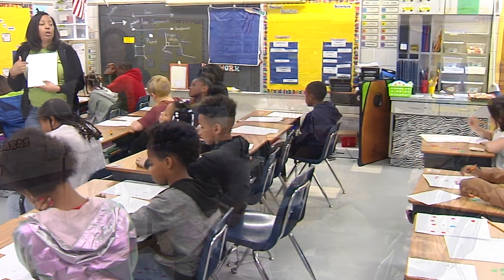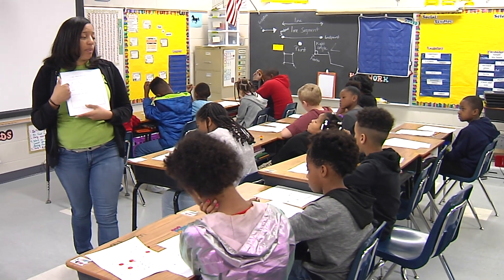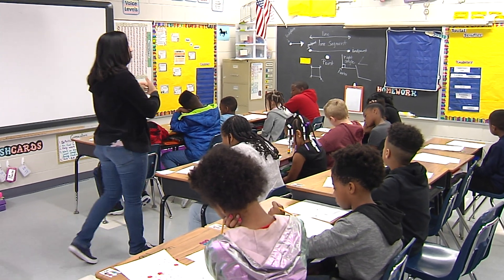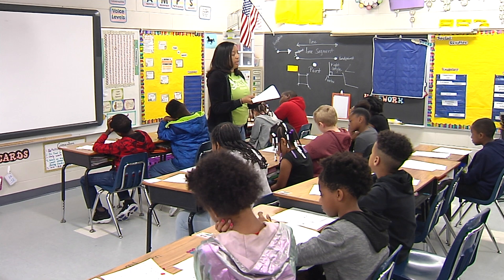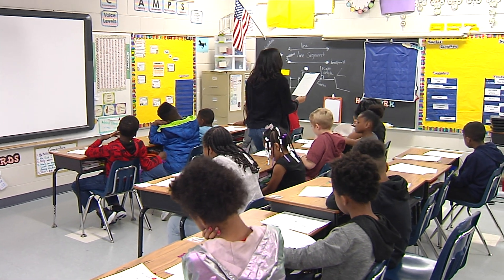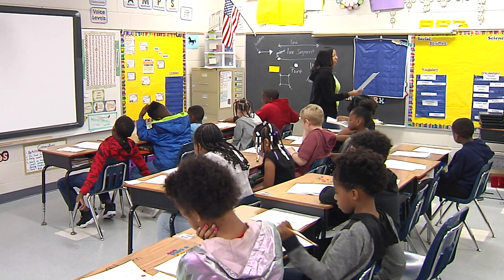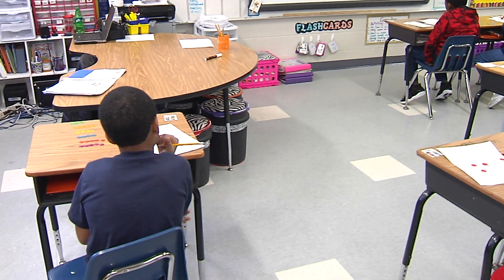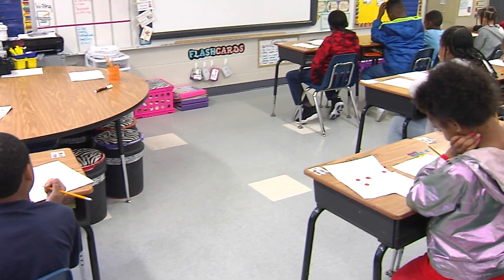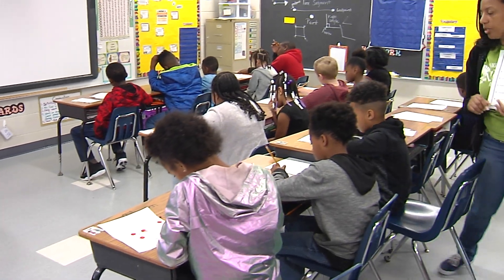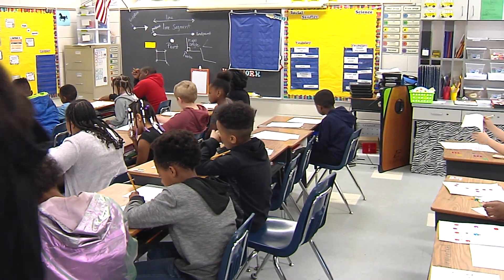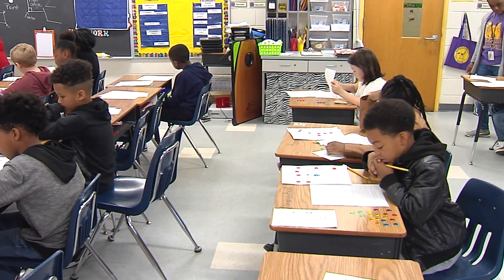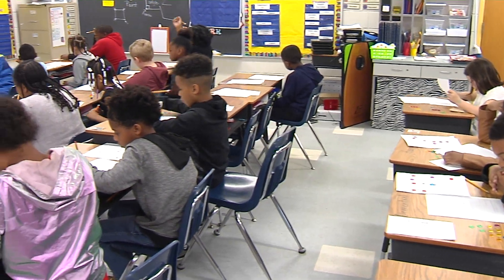Now I'm going to give you an exit ticket on lines, rays, and line segments — you're going to do the front part. The back part will be your station work. I'll pass these out and explain what you need to do. This will help me determine what you've picked up from today and what we might need to work on. For time, I just want you to put an L if it's a line, LS for a line segment, and R if it's a ray — just labeling them. Then at the bottom it says match each vocabulary word on the left with the definition on the right: a line, a line segment, and a ray. Good job.